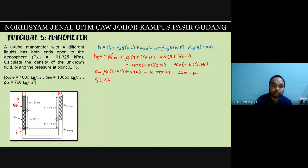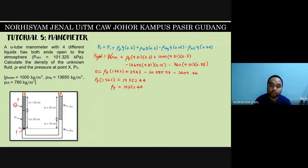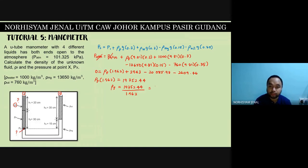So rho_f multiplied by 1.962 equals 19,752.44. Dividing both sides, rho_f equals 19,752.44 divided by 1.962, which gives rho_f equal to 10,067.5 kg/m³. This is the answer for the density of the unknown fluid.